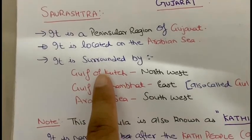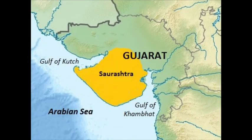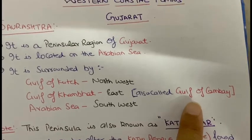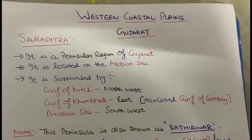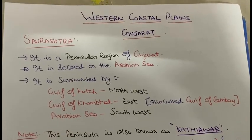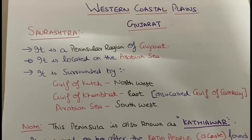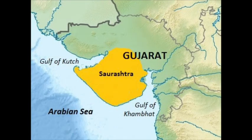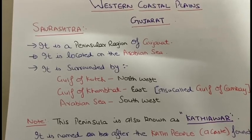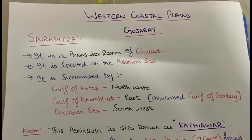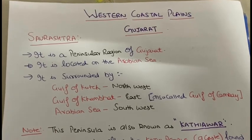The three water bodies surrounding Saurashtra are: one is the Gulf of Kachchh, one is the Gulf of Khambhat, and one is the Arabian Sea. So this is the peninsular region of Saurashtra.